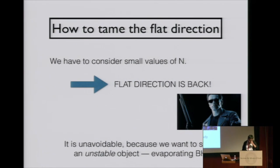The problem is flat direction. I said, at large enough n, flat direction disappears. But we have to see 1/n correction. We have to go to small n, otherwise we don't see 1/n correction. But then flat direction comes back. It is unavoidable because we really want to see unstable object evaporating black hole.